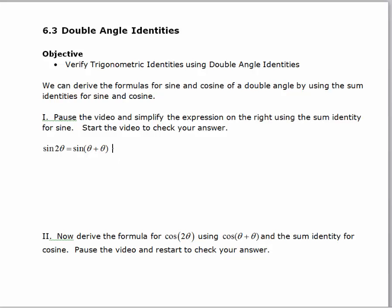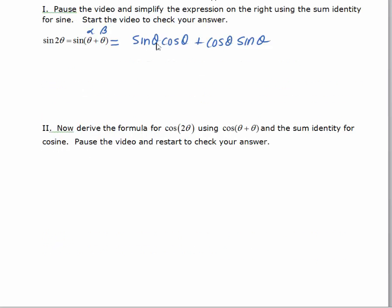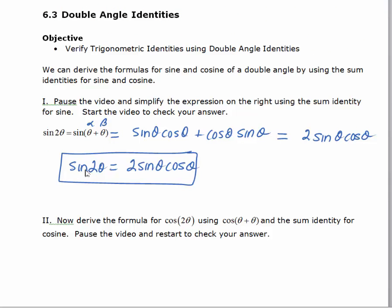Rewriting sine of theta plus theta, letting theta be alpha and then theta be beta, we use the formula for sine of alpha plus beta. That gives us sine alpha cosine alpha plus cosine alpha sine alpha. Now these two terms are exactly the same because of the commutative property of multiplication, so this gives us two sine theta cosine theta. And that's our first double angle identity: sine of double an angle equals two sine theta cosine theta.